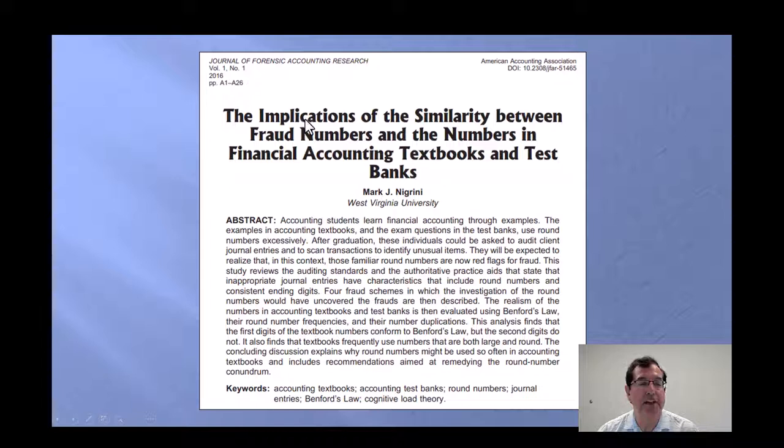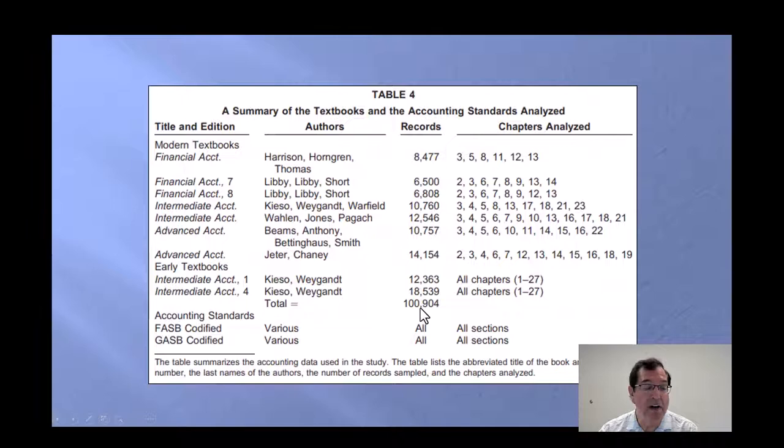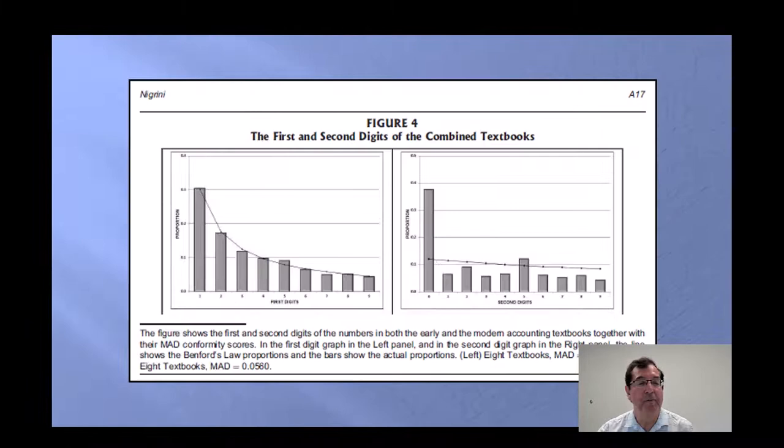Accounting and finance data sets generally do conform to Benford. The focus here was on the implications, but I had to start by looking at the digit patterns in the numbers in financial accounting textbooks. I had a rather large sample, over 100,000 numbers from various financial accounting textbooks, hand-collected, and the question to start off the ball rolling was whether these conformed to Benford's law. The results here show that the first digits are very close. The line is Benford's law, 30.1, 17.6, down to 4.5%, and the height of the bar shows the actual proportion. We can see that for a number of these, the 9, the 8, the 2, and the 1, the actual and the expected are nearly spot on.